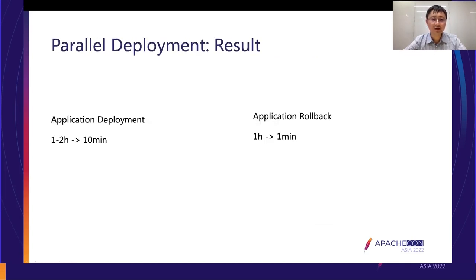That is very helpful because we don't need to write any extra code — we just put the application in a tenant and the JVM handles the rest. The results for parallel deployment: application deployment time is reduced dramatically from one to two hours down to ten minutes, and rollback time is reduced from one hour to less than one minute. It's very fast.